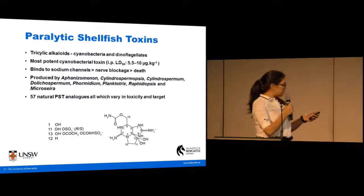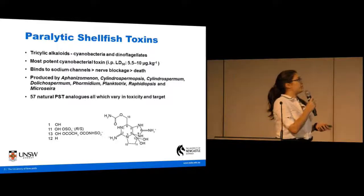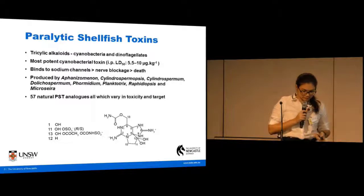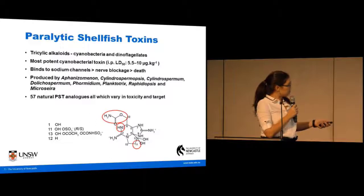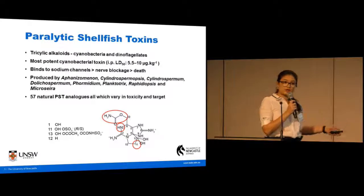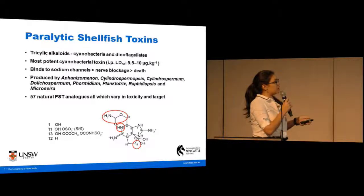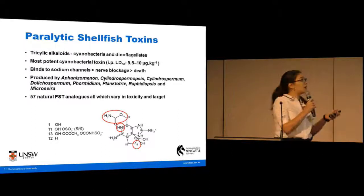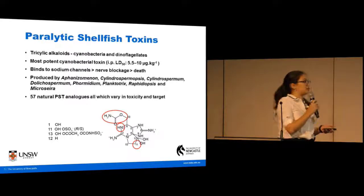As you can see here, they're produced by quite a large number of cyanobacterial genera. And from this core structure, which is saxitoxin, you can have modifications to three functional groups shown here. This can be either a single modification or a combination of modifications, and all these modifications together give rise to the 57 naturally occurring analogues of saxitoxin that we detect in nature.